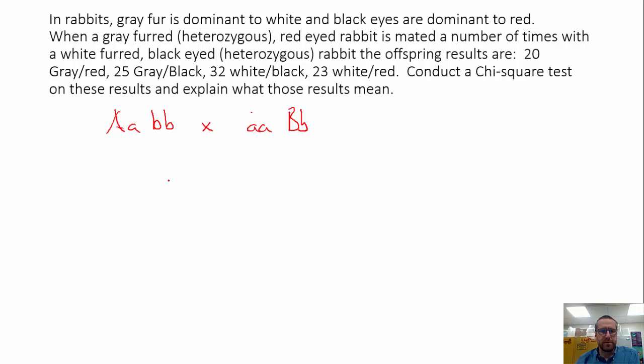We need to come up with possible offspring here. So you can have, from the standpoint of the fur gene, you can have heterozygous or homozygous recessive. And from the standpoint of the eye color gene, you can have heterozygous or homozygous recessive. And then we need to come up with all the different ways that these can come together. So you can kind of foil these out.